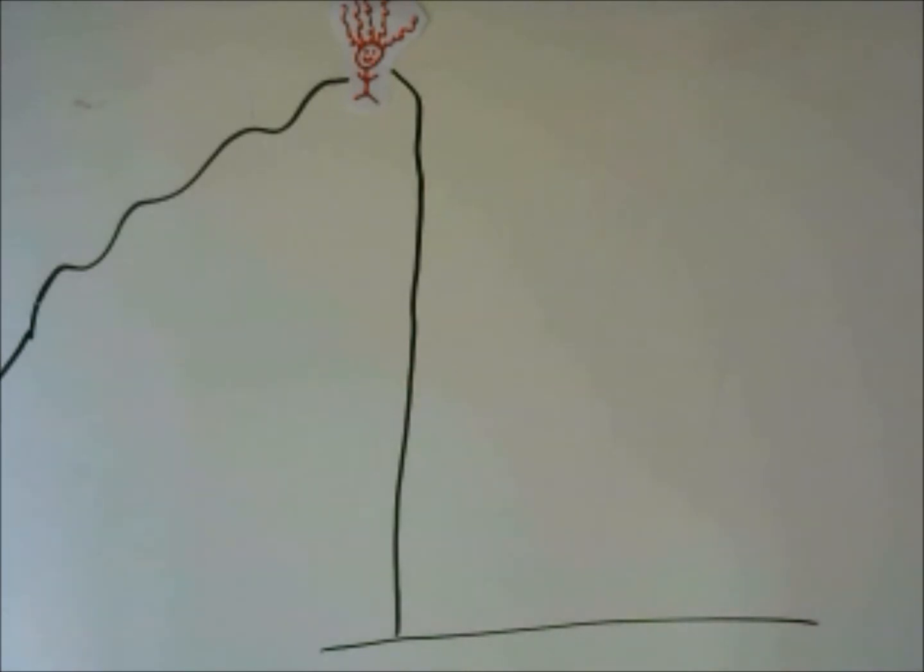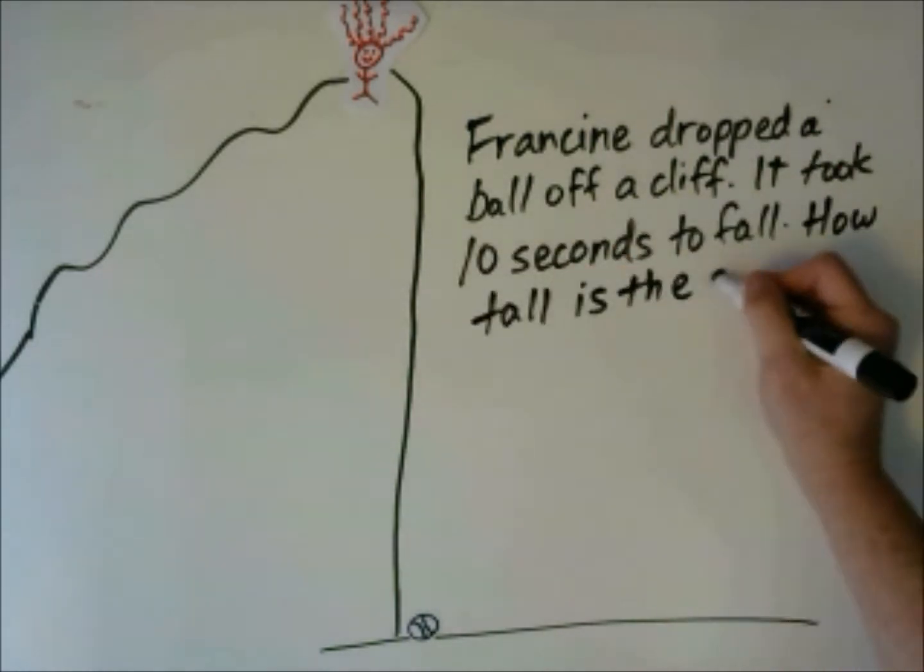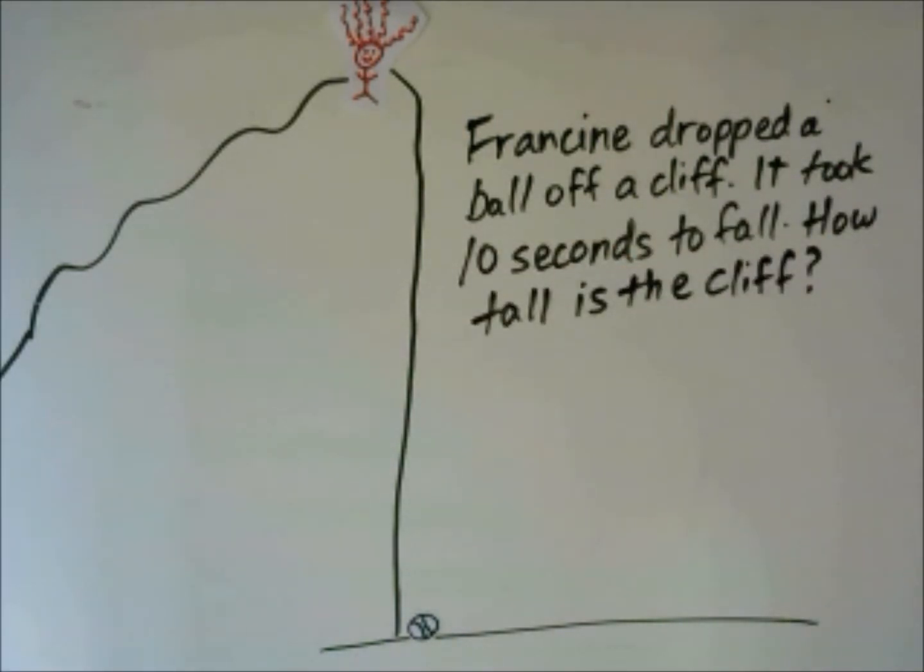She got a baseball out of her bag and timed how long it took to drop. Francine dropped a ball off a cliff. It took 10 seconds to fall. How tall is the cliff? We can solve this using kinematics equations, but first we have to talk about free fall.